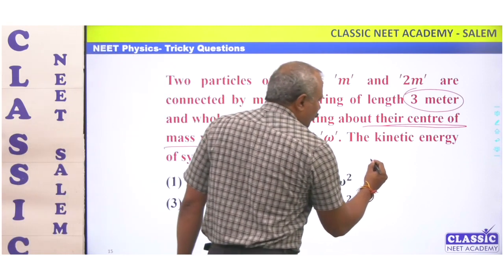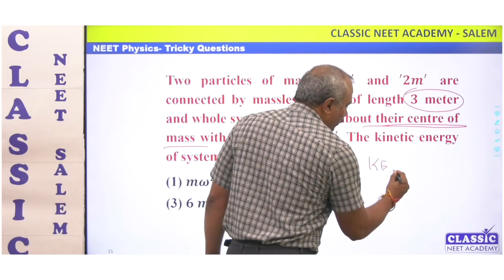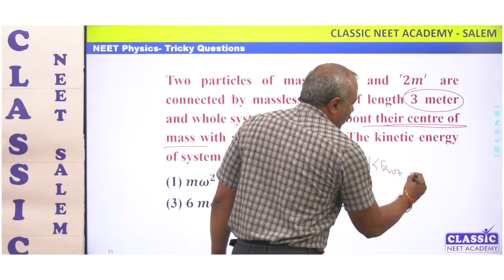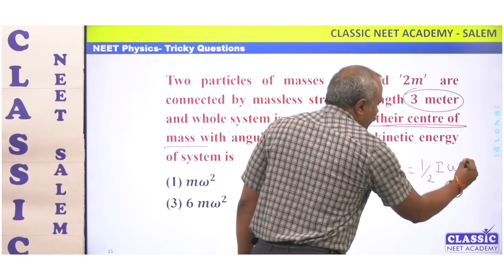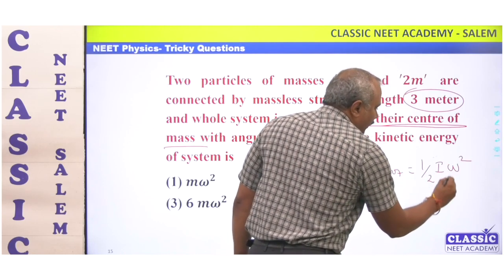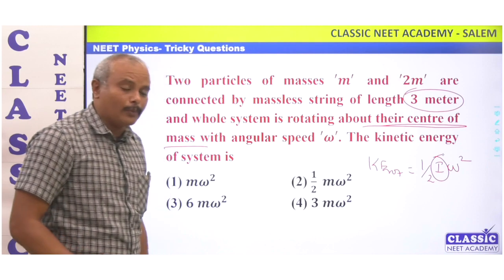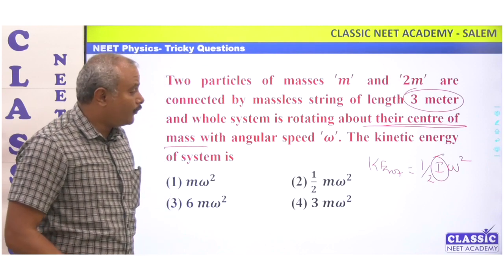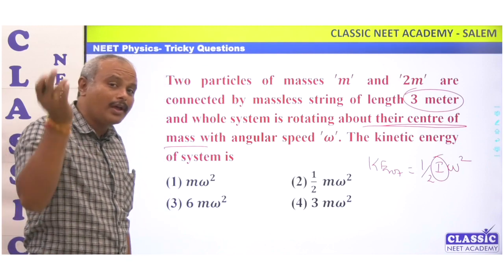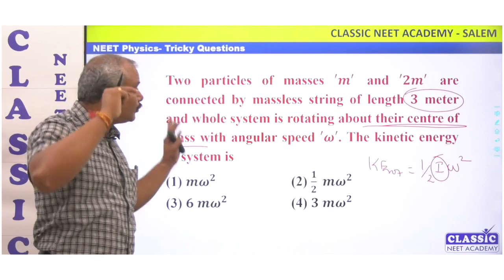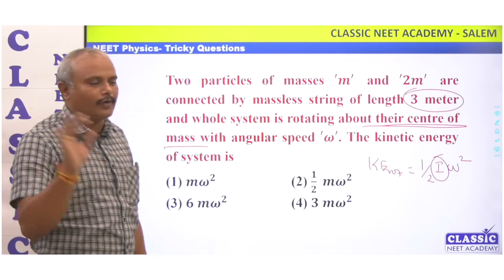Kinetic energy is very simple — rotational kinetic energy is equal to half into I into omega squared. This I is going to change, so we have half into I into omega squared, and we need to compute I with respect to the center of mass.